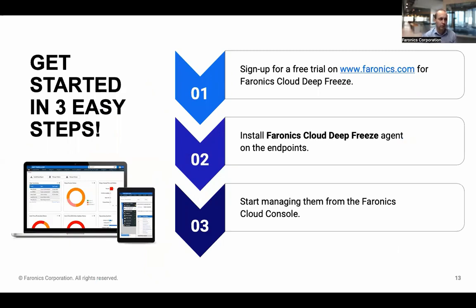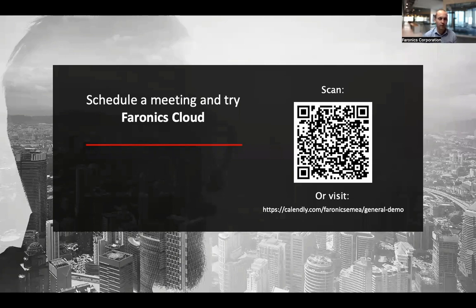You don't have to take my word for it — there's a free trial available from our website. If you go to phoronics.com, you can sign up for a free trial. You just need to activate the functionality you want in your policy and install the cloud agent on the devices. Once the cloud agent is on the devices, they will appear in the cloud console and you can manage the devices. That QR code is there if you'd like a more detailed demo, or to find out more about Phoronics working with your particular environment — we can have a chat about your requirements and show you the product in more detail.